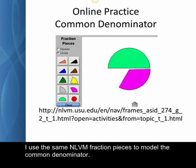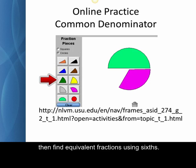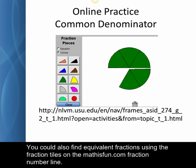I use the same NLVM fraction pieces to model the common denominator. To find a common denominator for one-half and one-third, you start with those pieces, then find equivalent fractions using sixths. You could also find equivalent fractions using the fraction tiles on the mathisfun.com fraction number line.